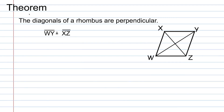Here's another theorem about a rhombus: the diagonals of a rhombus are perpendicular. For rhombus W-X-Y-Z, because of this theorem, we know that segment W-Y — one diagonal — is perpendicular to the other diagonal X-Z, forming right angles. The diagonals of a rhombus are perpendicular. That's one of the cool properties we're going to be looking at in the coming example.